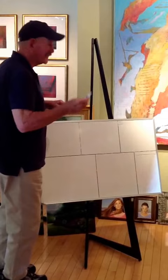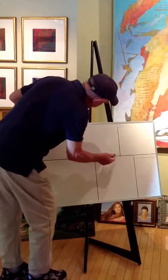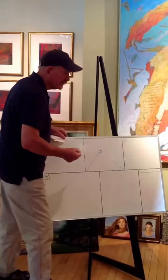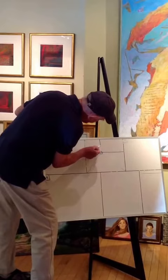Sometimes it doesn't work, other times it does. So how I do it is I draw a diagonal like this, and then I draw from a corner a right angle to the diagonal. And that's the golden section. So all of my paintings are based on this division of space.